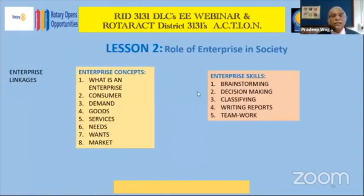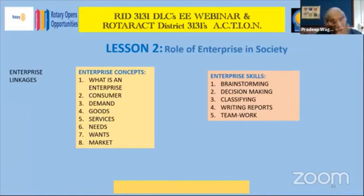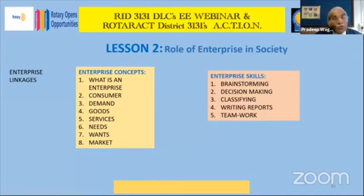Lesson two: enterprise education comprises concepts and skills. Lesson two covers various concepts — what is an enterprise, who is a consumer, what is demand, what are goods, what are services, what are needs, what are wants, and what is market. Please refer to that lesson on the role of enterprise. You will notice that all these terms are known to you. Even in schools, small children can answer what goods and services are. This training will help you get that vocabulary together so you'll be able to start talking.